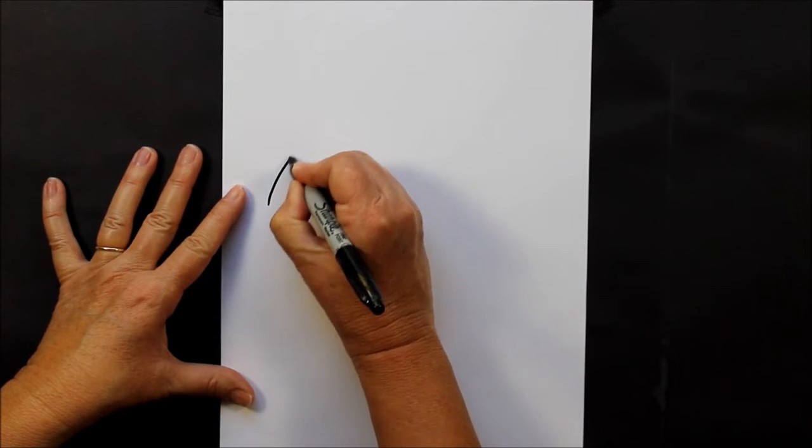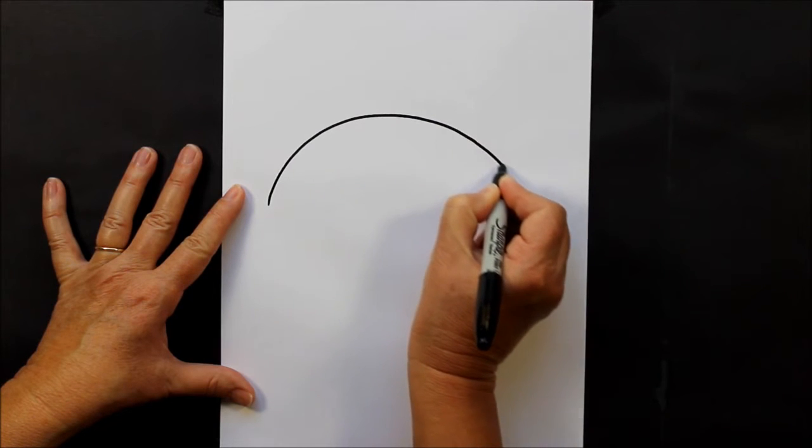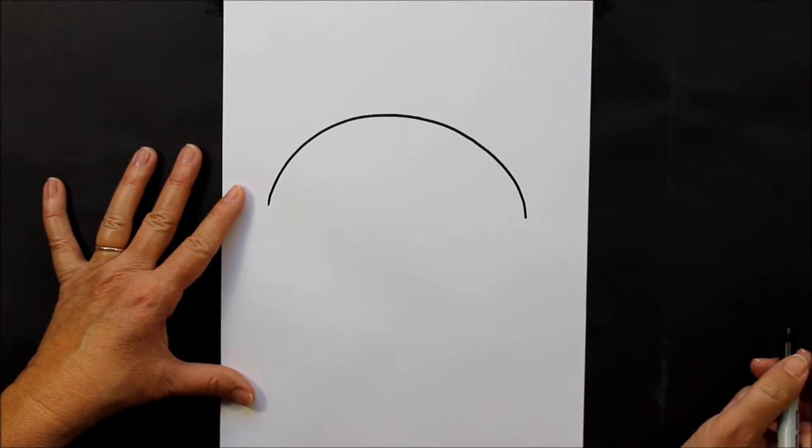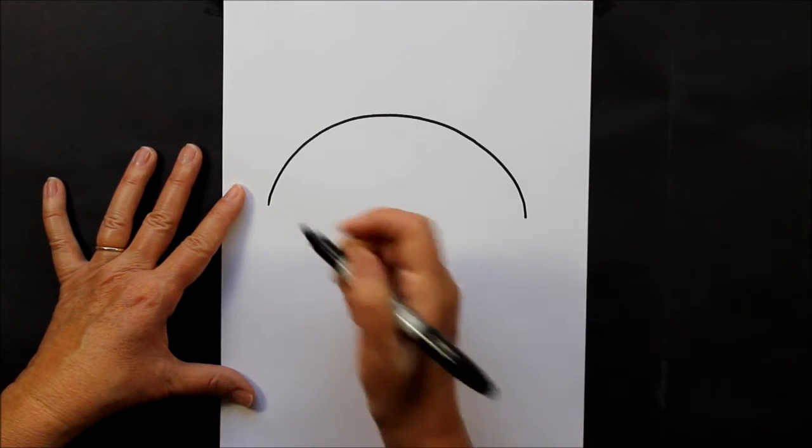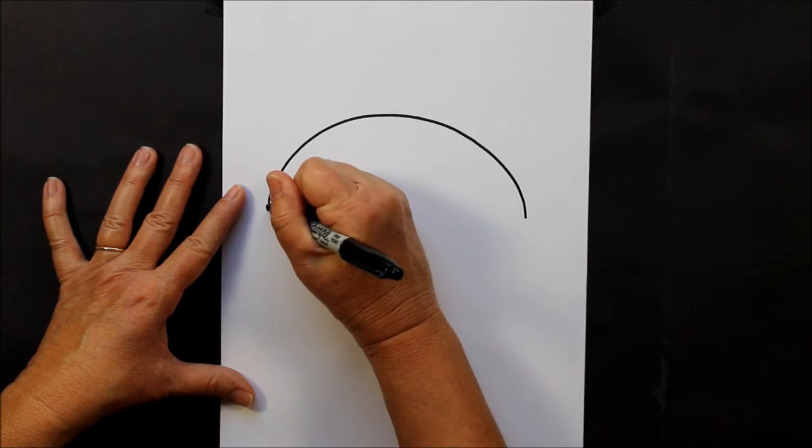The first thing that we're going to do is make a curved line, just like this. Now underneath this curve, we're going to close it up with another curve coming this way to close up our football.